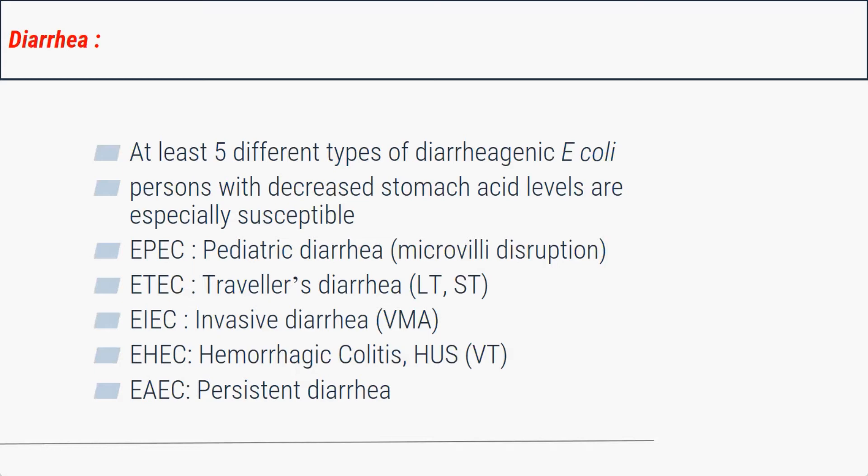Enteroinvasive E. coli, or EIEC, causes invasive diarrhea similar to Shigella, producing dysentery or bloody diarrhea. EHEC — enterohemorrhagic E. coli — also causes bloody diarrhea and specifically hemorrhagic colitis by producing verocytotoxin, which is also associated with hemolytic uremic syndrome (HUS). Finally, enteroaggregative E. coli (EAEC) usually causes persistent diarrhea.